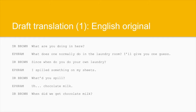Our first stop is a quick conversational exchange between two characters, Dr. Andy Brown and his son Ephraim, who is in the laundry room after a little morning accident. The chat goes like this. Dr. Brown says, 'What are you doing in here?' Ephraim answers, 'What does one normally do in the laundry room? I'll give you one guess. Since when do you do your own laundry? I spill something on my sheets. What do you spill? Chocolate milk.'